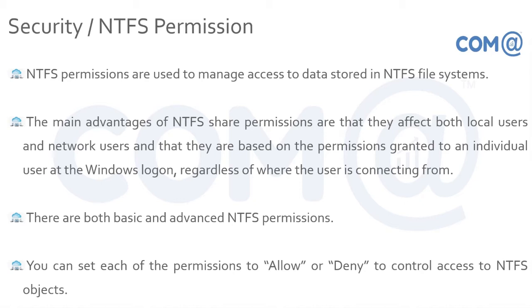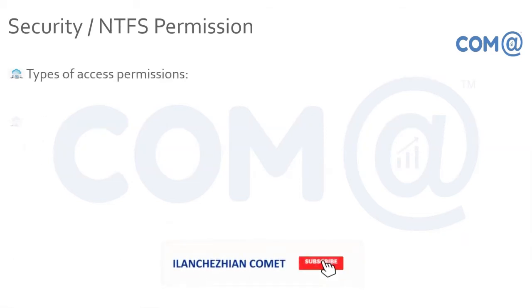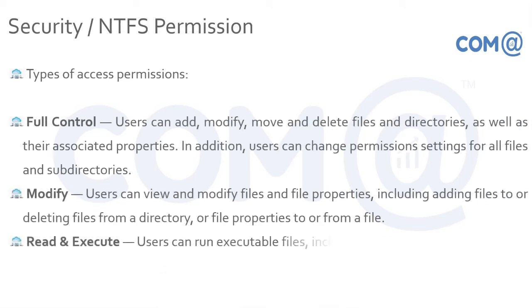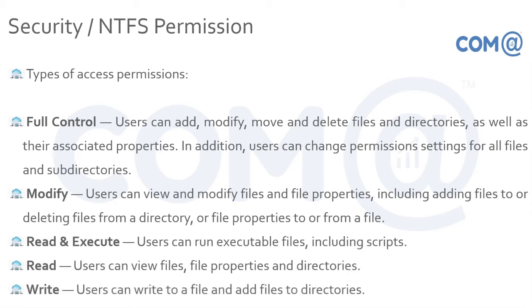Within security permissions, there are two types: allow permission and deny permission. When a permission is set to deny, the most restrictive permission is applied. The permission types include: full control, modify, read and execute, read only, and write only. With full control you can make changes, add, modify, move, and delete. With modify permission, you can modify file properties, delete files, and add files. With read and execute, you can open files, view contents, and execute scripts.